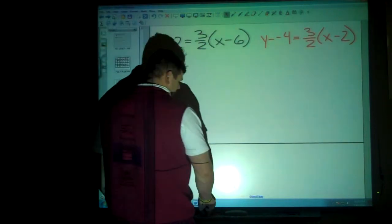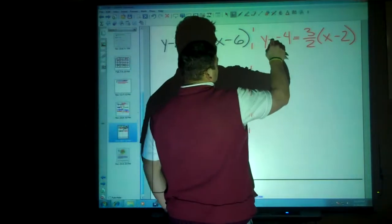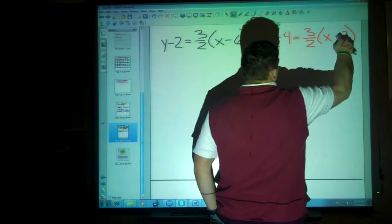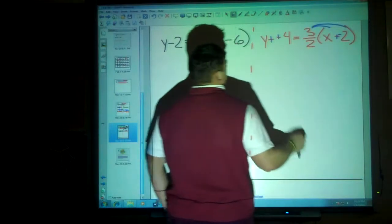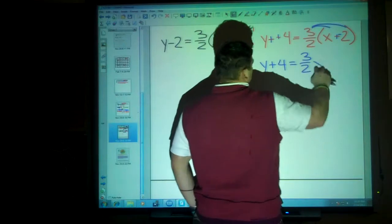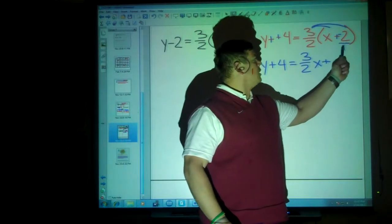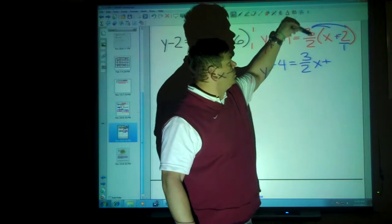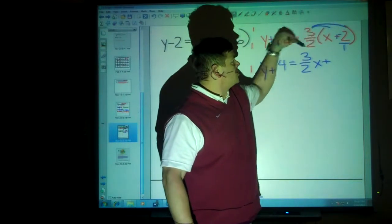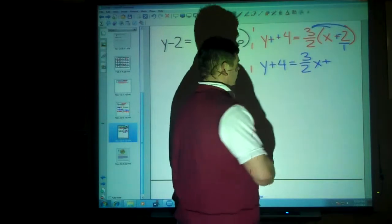So we'll start with a 1 on this side. Now, if we change this to plus positive and plus negative and distribute, you get y plus 4 equals 3 over 2x plus... Now, here's the trick. If you write this as a fraction, you've got 3 over 2, which is a positive being multiplied by a negative 2 over 1. The 2s would cancel, but you'd have a 3 times a negative, so it ends up being negative 3.